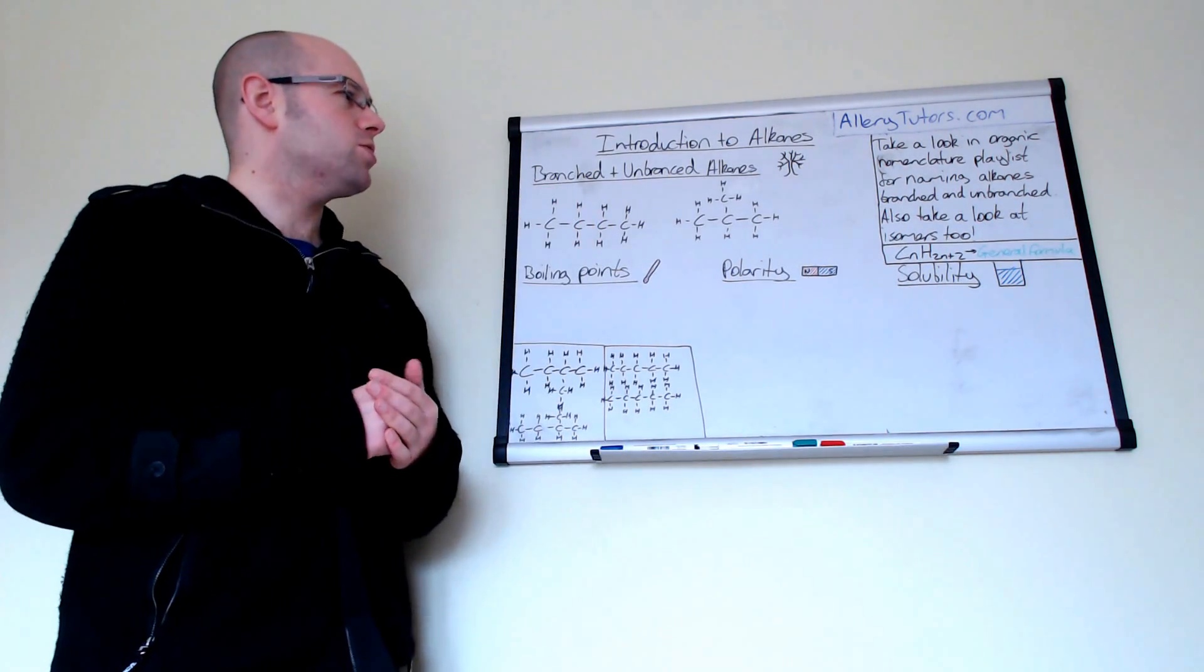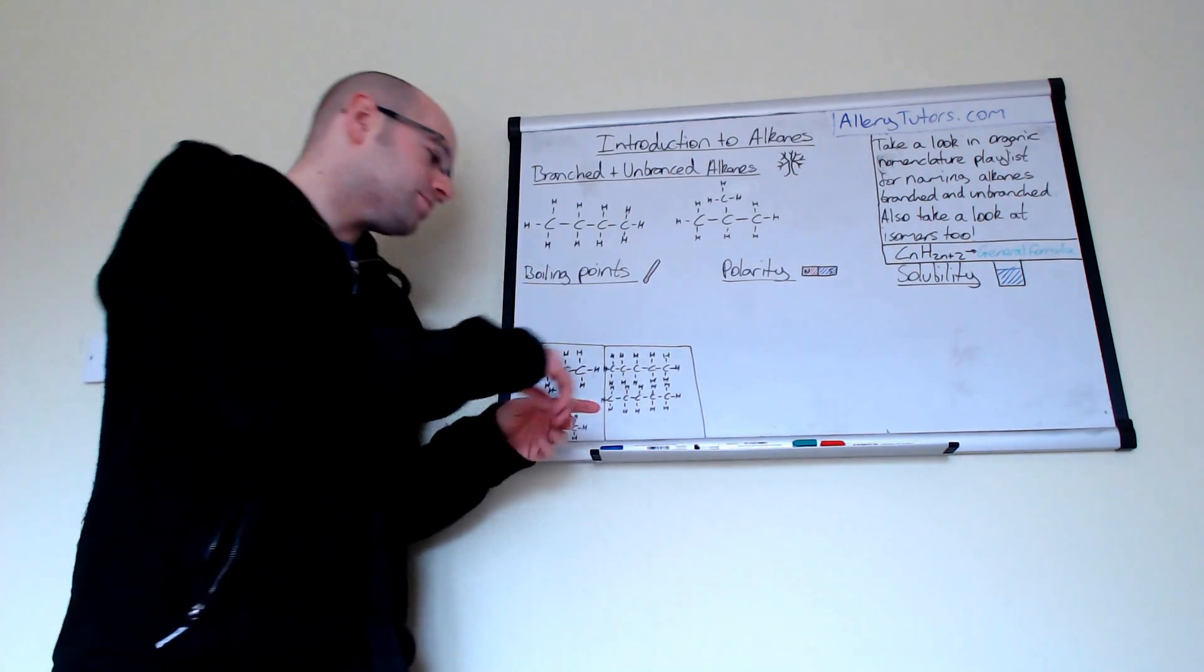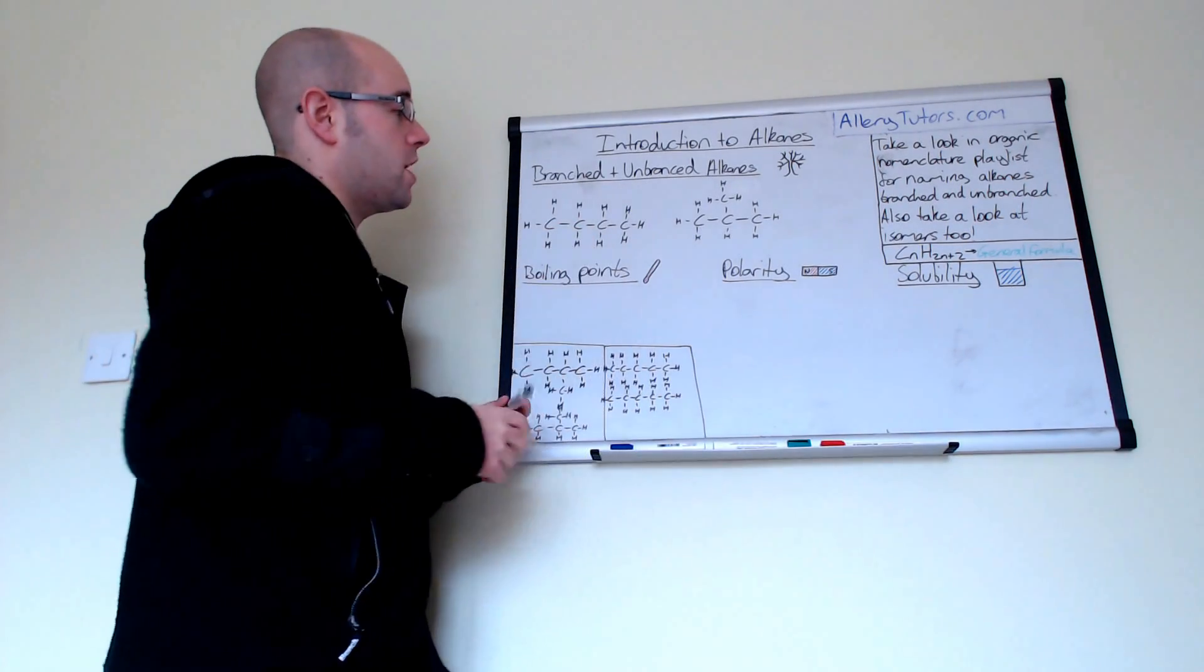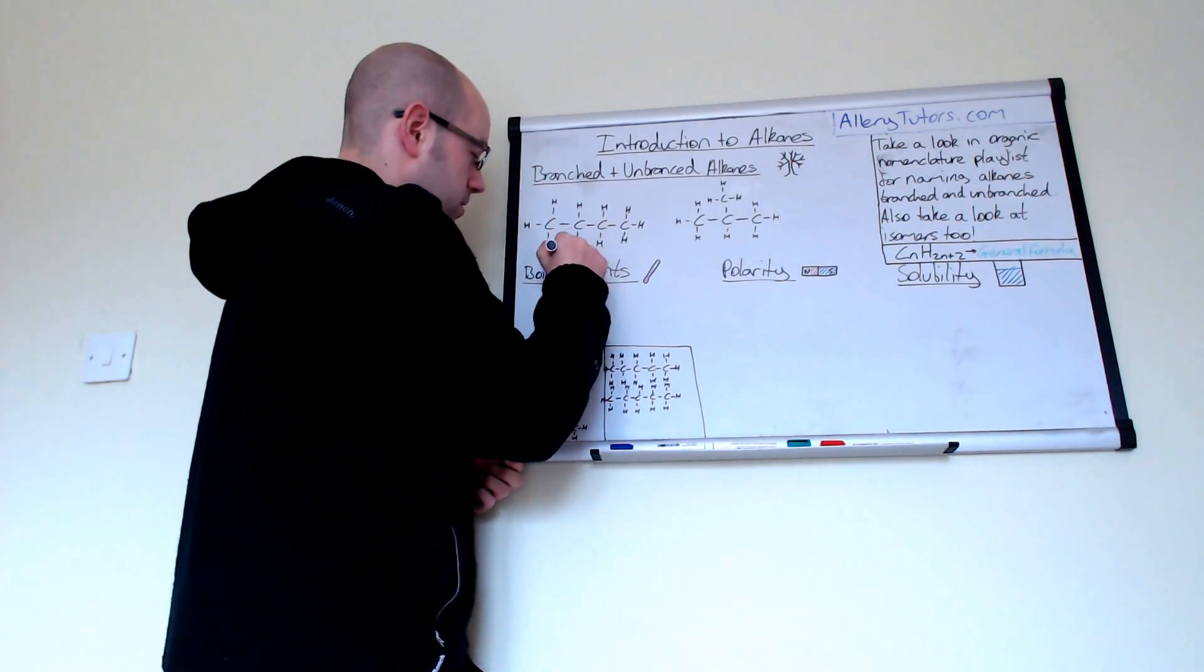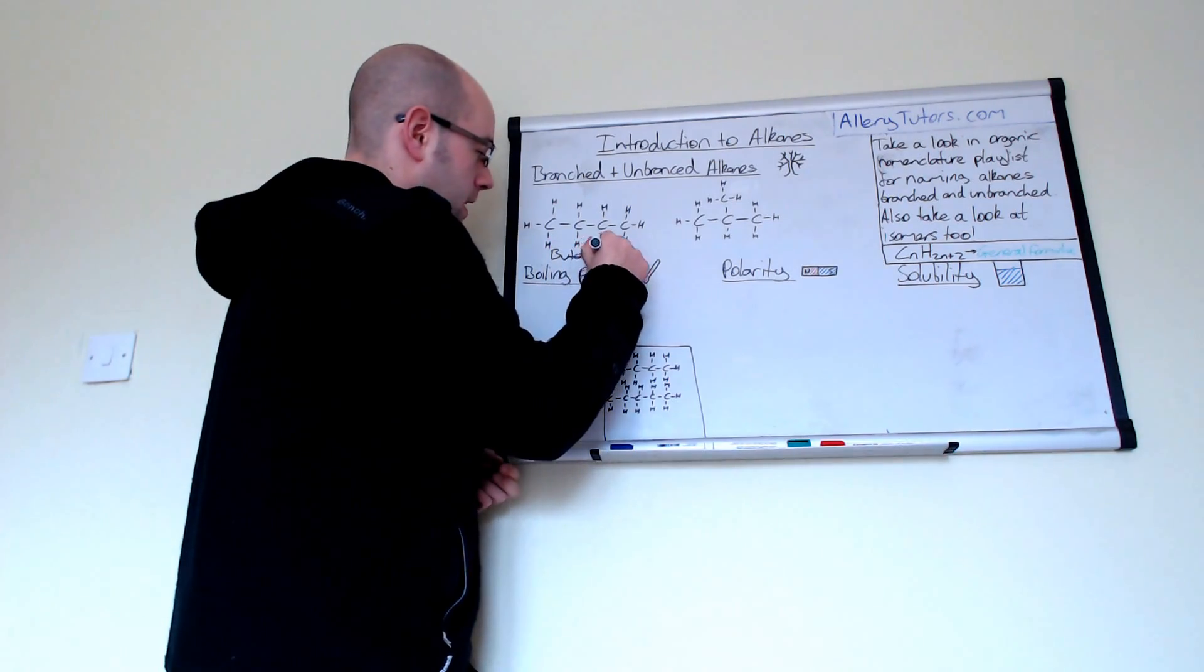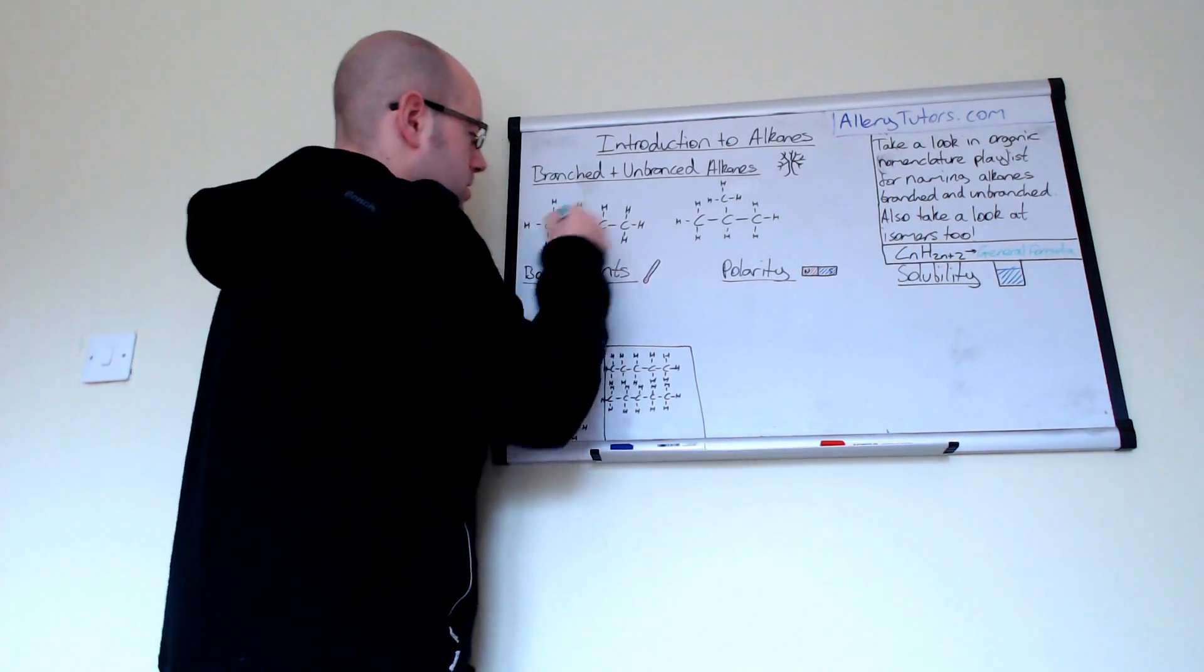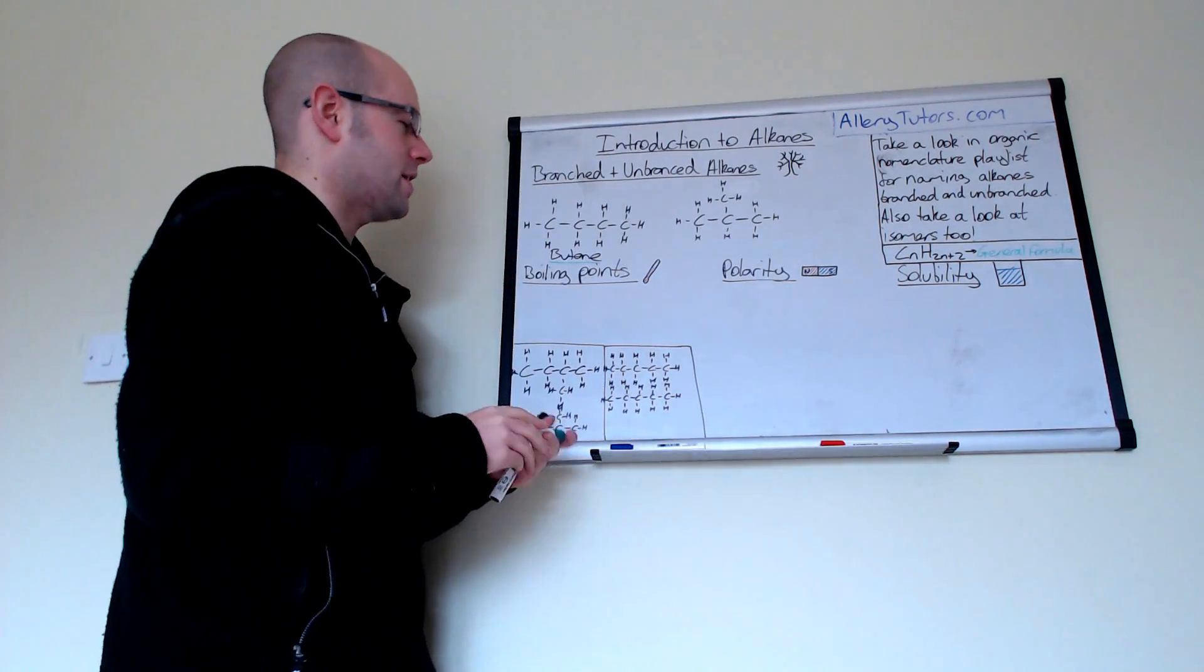And we're also going to look at naming these things as well. Now we've got two different types of molecules here. So we've got a straight chain molecule which is butane. This one's called butane. So I'll write that one there. You can see there's no double bonds in there at all. We can class that as saturated.